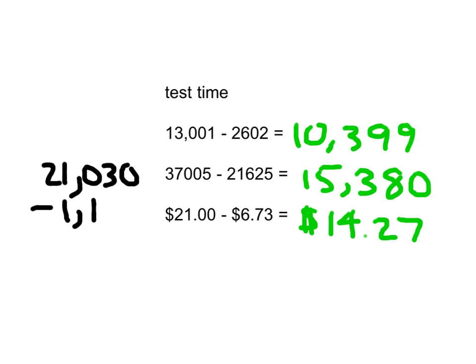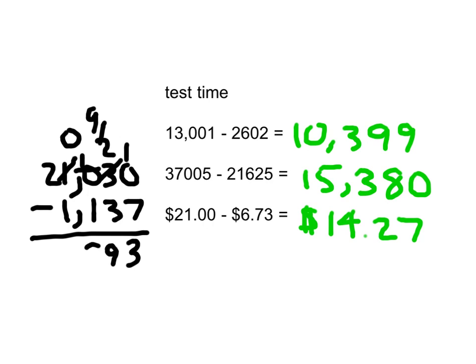And here's our final problem. 21,030 minus 1,137. 0 minus 7 can't do it. 3 becomes a 2. 0 becomes a 10. 10 minus 7 is 3. 2 minus 3 can't do it. I can't regroup from the hundreds place, so I go to the thousands place. The 1 becomes a 0. 0 becomes a 10. Now it can become a 9, so this 2 can become a 12. 12 minus 3 is 9. 9 minus 1 is 8.